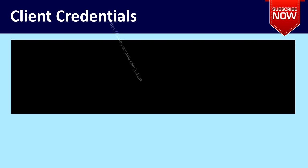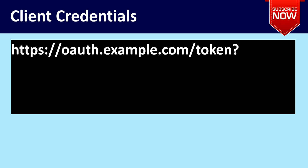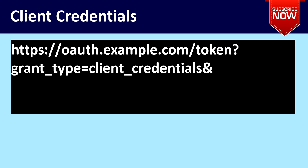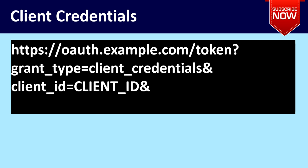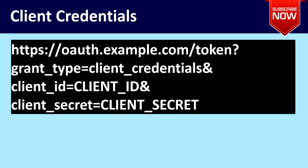Finally, client credentials. The URL also ends with token. You send the grant_type as client_credentials, along with the client_id and client_secret. This client credentials grant type is used by the service itself for application API access.